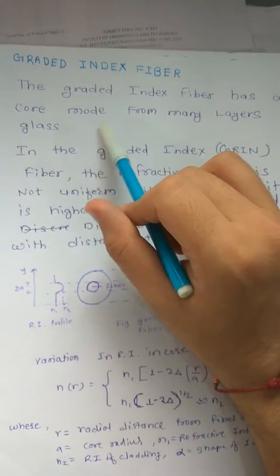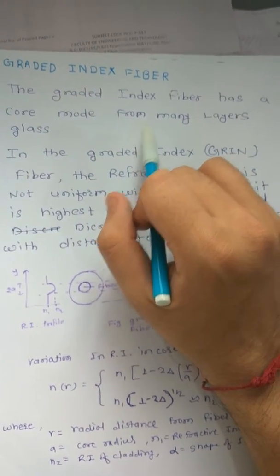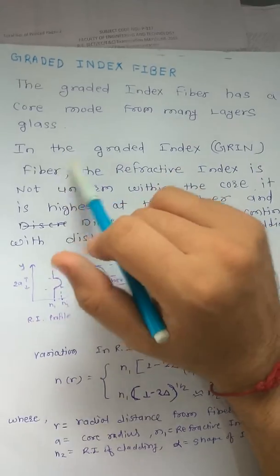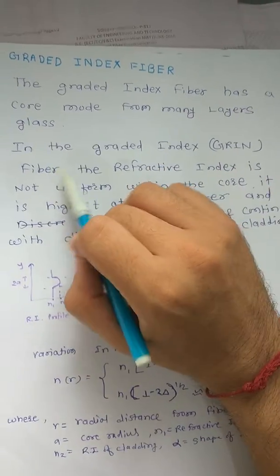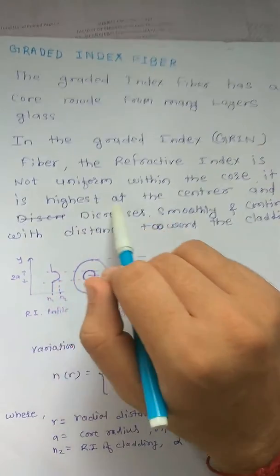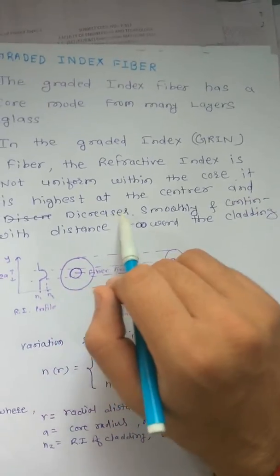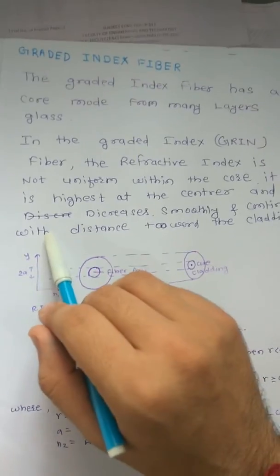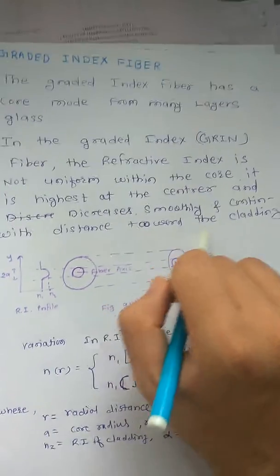A core made from many layers of glass. In the graded index GRIN fiber, the refractive index is not uniform within the core. It is highest at the center and decreases smoothly and continuously with distance towards the cladding.